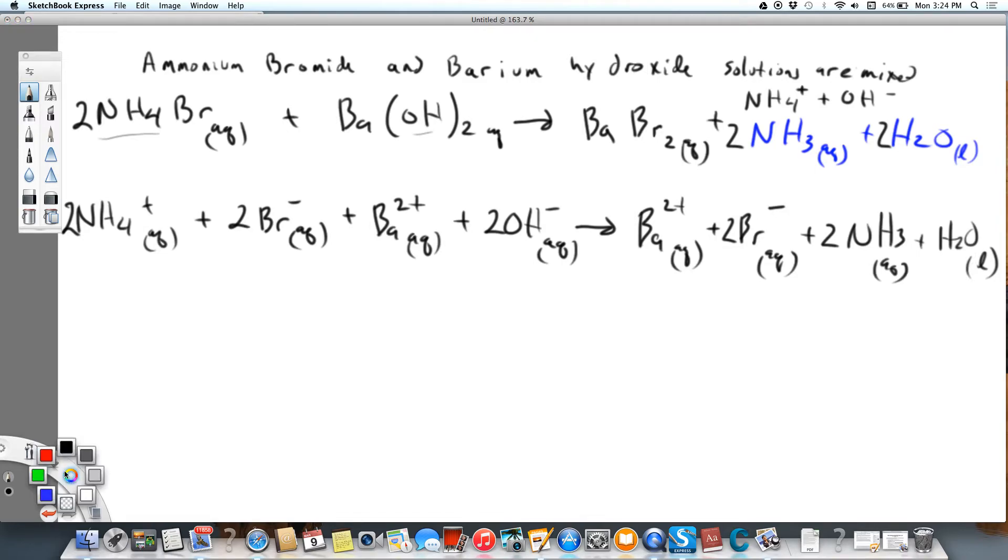Okay, so what can we get rid of? We can get rid of not ammonium, because it changed. So those things that change, we're going to keep in the net ionic equation, but bromide, you can see, did not change. It gets crossed off on each side, and barium did not change.